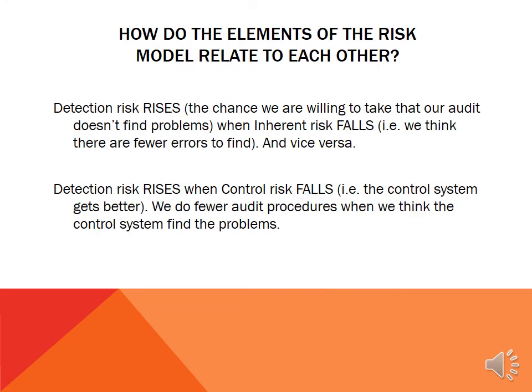So how do the elements of the risk model relate to each other? Detection risk rises — the chance we're willing to take that our audit does not find problems goes up — when inherent risk falls, because we don't think there are very many errors to find, and vice versa. Detection risk also rises if the client's control risk falls — that is, the client has better controls.